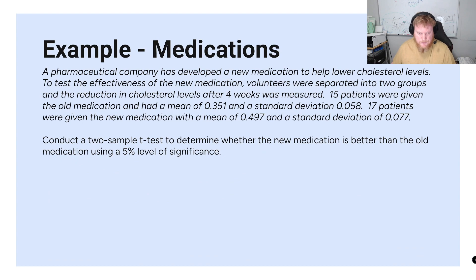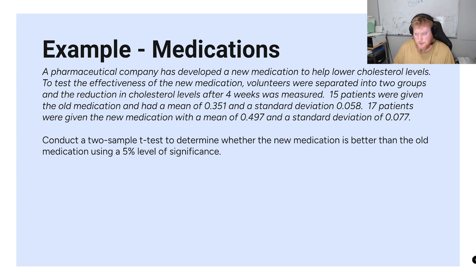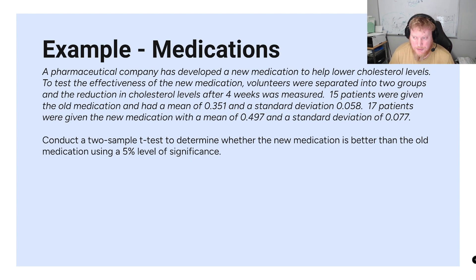For our first example, a pharmaceutical company is developing a new medication to help lower cholesterol levels. To test its effectiveness, volunteers were separated into two groups — Group 1 and Group 2 — and the reduction in cholesterol levels was measured after four weeks.